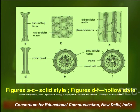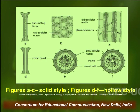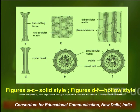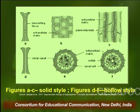These figures represent the two styles: the upper one shows the solid style, the lower one shows the hollow style. In the longitudinal section of the solid style, tissue is present even in the middle portion, and in the transverse section, pollen tubes can be seen in the intercellular spaces. In the hollow style below, it is a pipe-like structure hollow from the centre, and pollen tubes can easily glide down through the canal formed in the style.